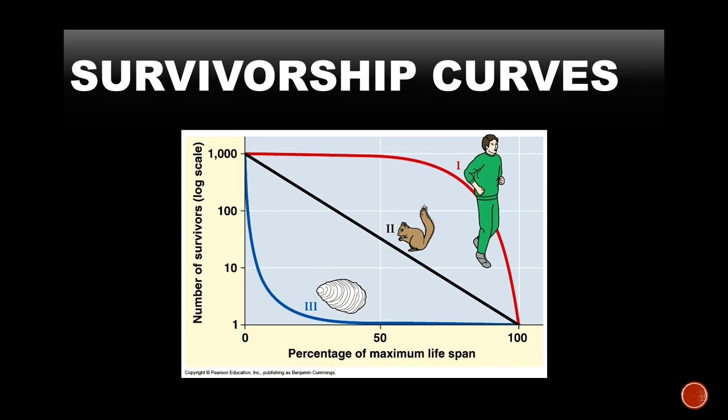Looking at the figure, you can see three types of curves. Where the human is shown, that is the Type 1 curve. Where the squirrel is shown, that is the Type 2 curve. And where the pearl oyster is shown, that is the Type 3 curve. We will cover these in detail in upcoming videos. The survivorship curve is important in population ecology because rates of survival are shown with the help of this curve.